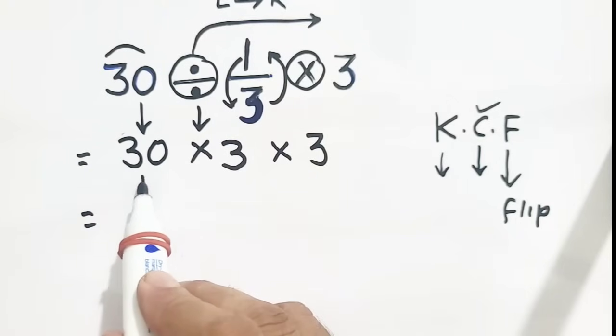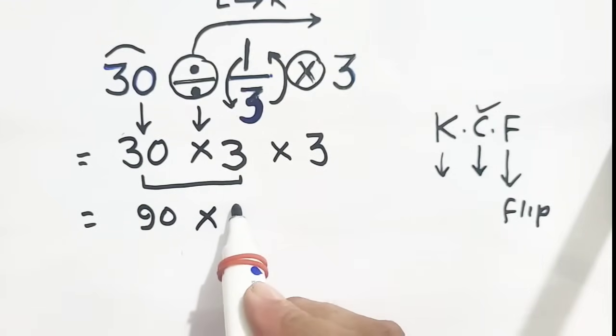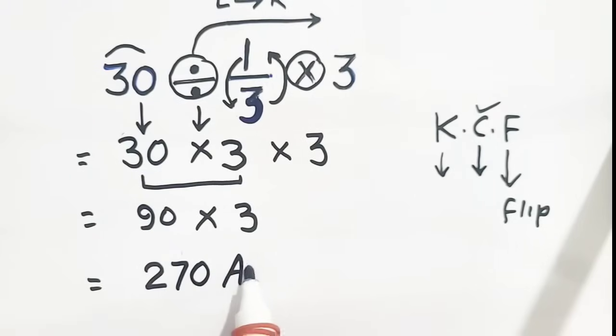So it is very simple now. 30 multiplied by 3, it will become 90 multiplied by 3. So 90 multiplied by 3 will be equal to 270, which is your answer. Thank you.